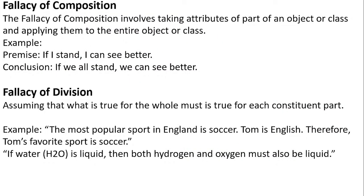Fallacy of composition: taking attributes of a part of an object and applying them to the entire object or class. For example: 'If I stand, I can see better. Therefore, if we all stand, we can all see better.' Something that applies to one individual is incorrectly applied to the whole group. This is the fallacy of composition.